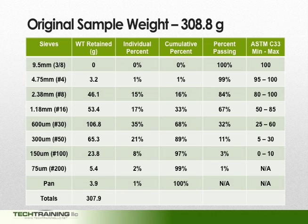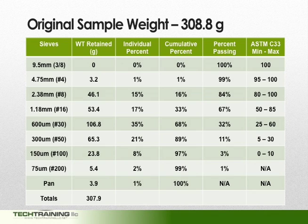Let's now compare our results to ASTM C33 standard specification for concrete aggregates. Section 6 of ASTM C33 defines the grading requirements for fine aggregate. It states that on the 9.5mm sieve, 100% of the material must pass — which our sample satisfies. On the 4.75mm sieve, 95 to 100% must pass — we had 99% passing, which meets specification. Looking at the minimum and maximum values for each sieve listed, our sample does meet ASTM C33 standard specification for concrete aggregates.